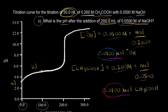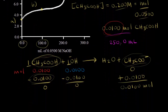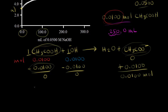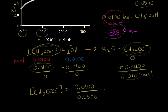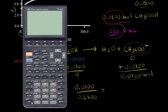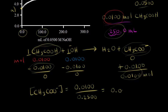What is the total volume? We started with 50 milliliters and added 200 more, giving us 250 milliliters, which is 0.25 liters. The concentration of acetate is moles over liters: 0.01 moles over 0.25 liters. 0.01 divided by 0.25 gives us a concentration of 0.04 molar.